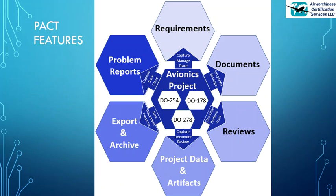What we're looking at here is a visual depiction of PACT. At the center is the avionics project, and a project can be considered a system, for example. Within that system or project, you might have various hardware or software items subject to different types of compliance, such as DO-254 for airborne hardware, DO-178B or C for airborne software, and DO-278A for ground-based software. So that is really the center of your PACT universe.